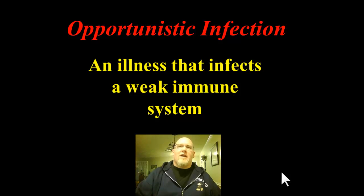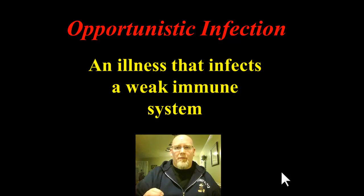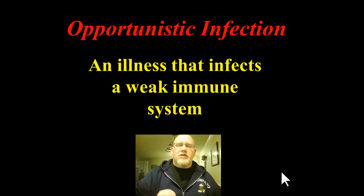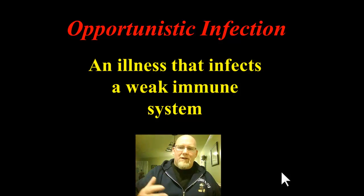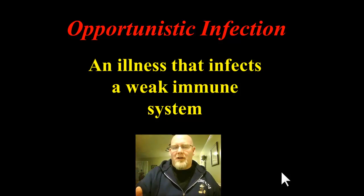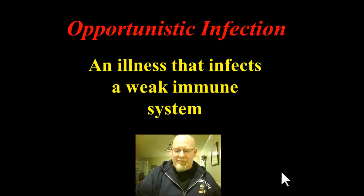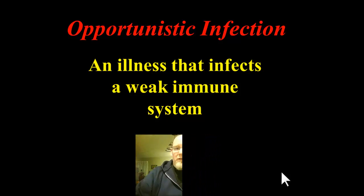HIV allows you to get sick because of all the other opportunistic infections that you get — that's where the issue comes in. If someone dies from having AIDS, it'll typically be listed as a complication of HIV or AIDS, meaning their immune system was so weak they were attacked by opportunistic infections they couldn't fight off. That's the real problem with HIV: it opens the doors to these other opportunistic infections. That word is important to understand and it will come into play shortly.